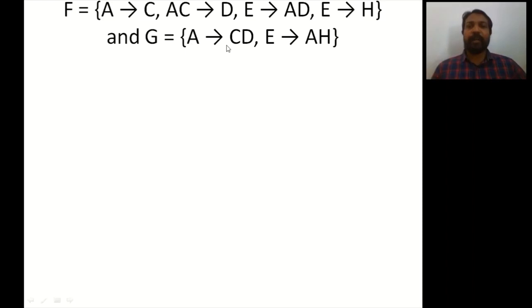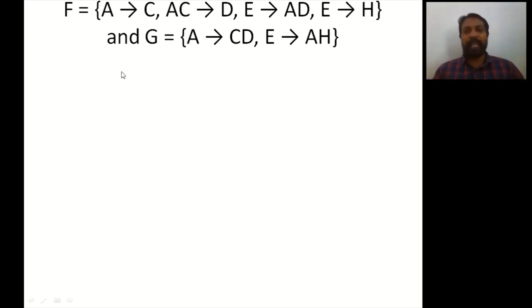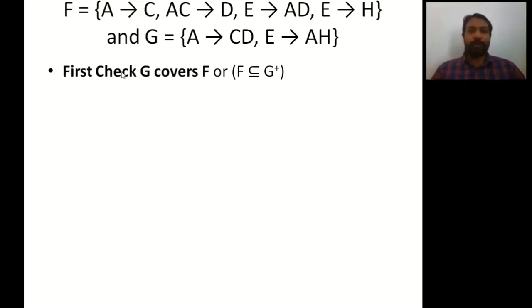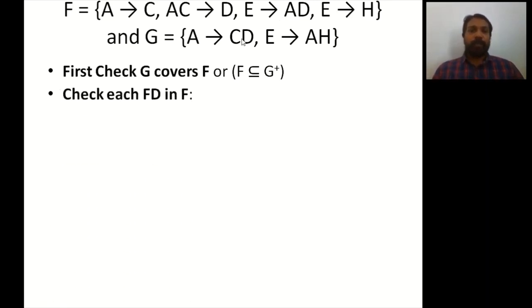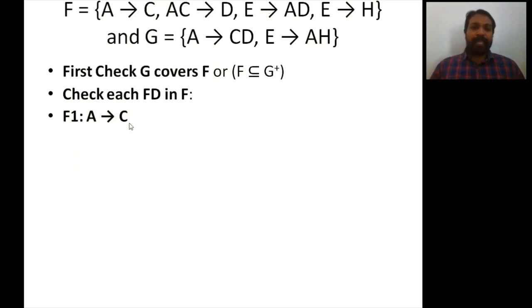We will see an example with two sets: F = {A→C, AC→D, E→AD, E→H} and G = {A→CD, E→H}. We need to check whether F and G are equivalent. First, check whether G covers F — that is, whether F is a subset of G+. We take each functional dependency in F. First: A→C. We determine A closure in G using the previous algorithm.